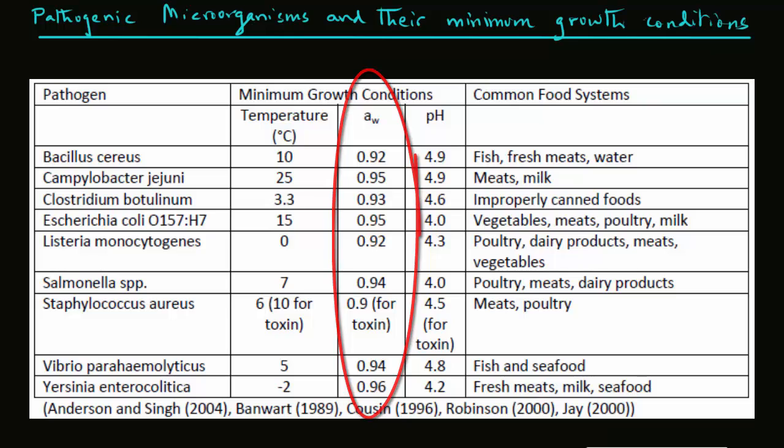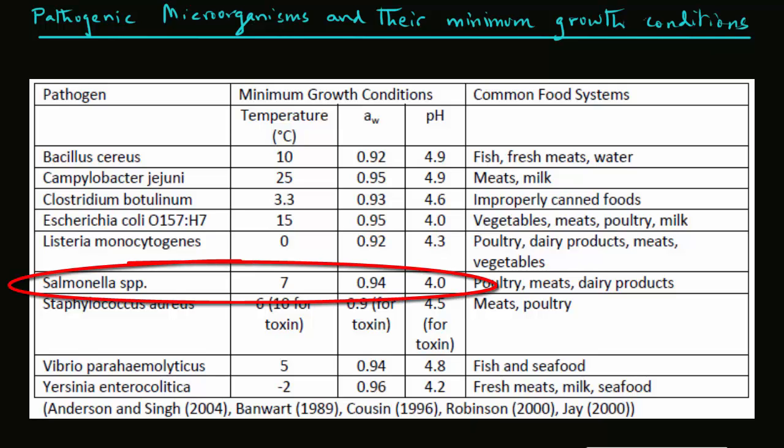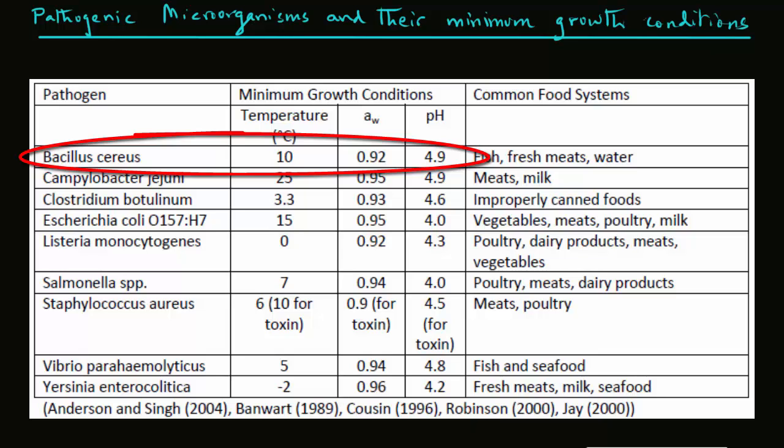Also, the minimum growth conditions related to pH vary with various pathogens. We can see, for example, salmonella will grow even down to pH of 4.0, whereas bacillus cereus will grow only above 4.9 pH.